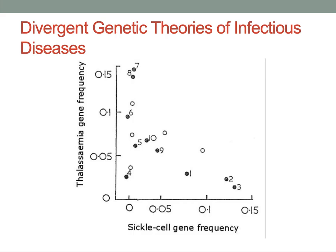Despite this initial limitation, the field of primary immunodeficiency research had been extraordinarily successful, with the development of immunoglobulin G substitution, bone marrow transplantation, gene therapy, and some of the first successes in enzyme replacement and cytokine therapy. By contrast, the field of population genetics of infectious diseases has fared less well. There was little or no communication between these two fields for approximately 50 years until the mid-1990s, when certain observations bridged the divide between them.